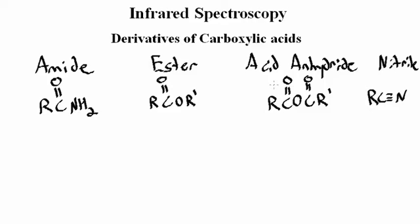Finally, we'll look at the IR spectra characteristics of derivatives of carboxylic acid. The most important functional groups that fall in this category are amides, esters, anhydrides, and nitriles.